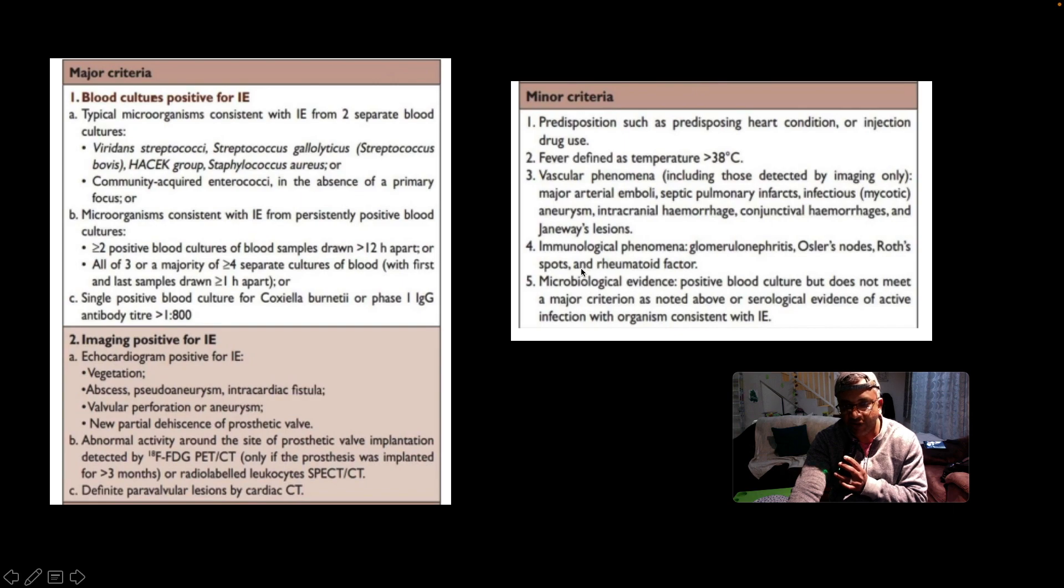You've got your vascular and immunological phenomenology which we covered a bit already. Vascular means those like major arterial emboli, septic pulmonary infarcts, mycotic infectious aneurysm in the walls of the vessels, intracranial hemorrhage, conjunctival hemorrhages, and Janeway lesions. Immunological phenomenology being glomerulonephritis, Osler's nodes, Roth spots, rheumatoid factor positive, and if you've got blood cultures which should not meet the major criteria that we have outlined.